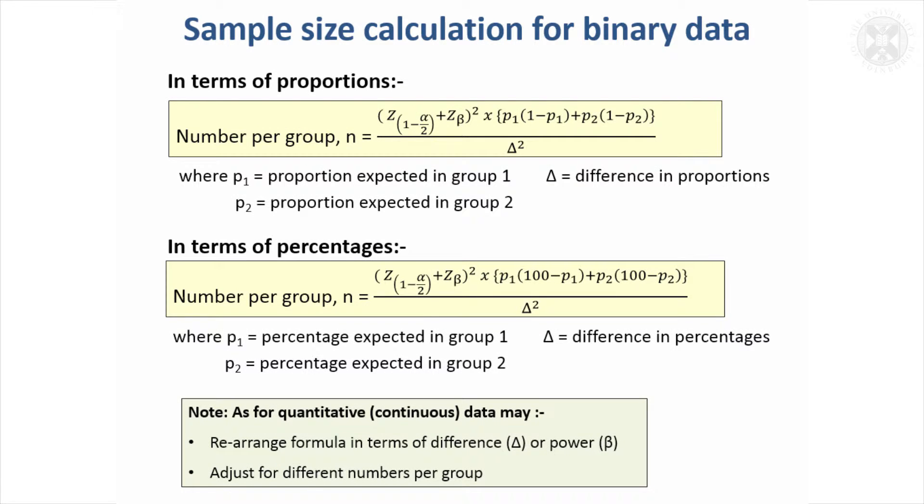So that formulae was for continuous data. A very similar formulae can be used if you've got binary data. So if your outcome has just got two categories, something either happens or it doesn't, and there's two possibilities, it's then binary data.